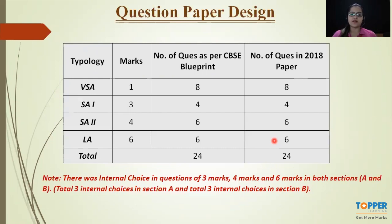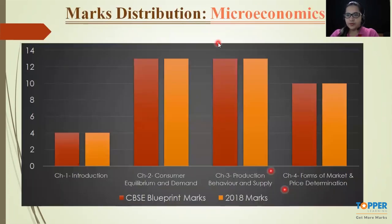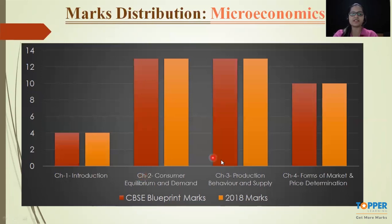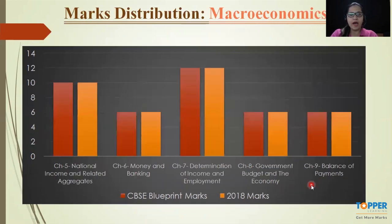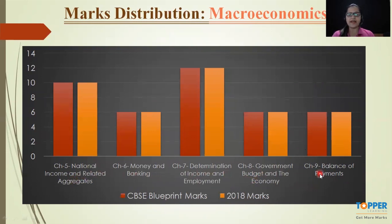There was also internal choice in questions of three marks, four marks, and six marks in both sections A and B. Now let's talk about marks distribution. Starting with microeconomics, the marks distribution was exactly the same as given in the blueprint: chapter one accounted for 4 marks, chapter two for 13 marks, chapter three for 13 marks, and chapter four for 10 marks. Coming to macroeconomics, chapter five accounted for 10 marks, chapter six for 6 marks, chapter seven for 12 marks, chapter eight for 6 marks, and chapter nine for 6 marks. Overall, it was an 80-marks paper.